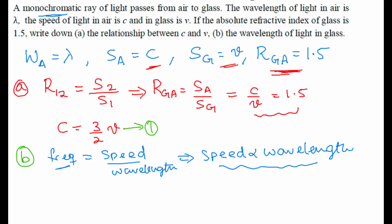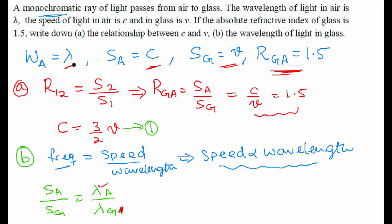Considering this equation, we can write that the speed of light in air divided by the speed of light in glass equals the wavelength in air divided by the wavelength in glass, which we need to find. We know the wavelength in air is lambda, and we know both the speed in air and the speed in glass.